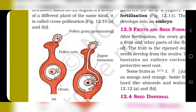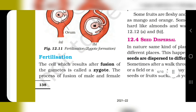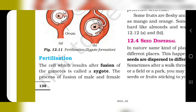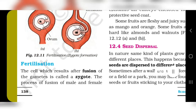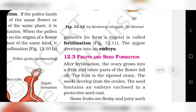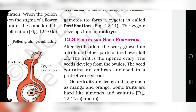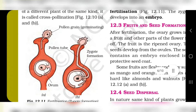Now, fertilization. The process of fusion of male and female gametes is called fertilization, and the resulting cell is called a zygote. The zygote develops into an embryo. After fertilization, the ovary grows into a fruit and other parts of the flower fall off. Fruit is a ripened ovary. Seeds develop from ovules, which contain an embryo enclosed in a protective seed coat.